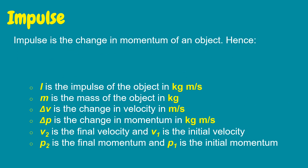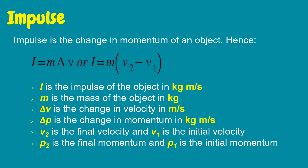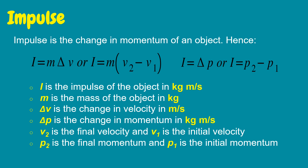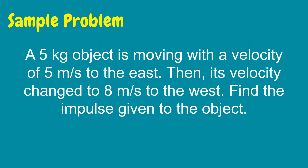Impulse is the change in momentum of an object. Hence, impulse is equal to mass times change in velocity, or mass times final velocity minus initial velocity, or impulse is equal to change in momentum, or impulse is equal to final momentum minus initial momentum. To apply the concept of impulse, let's solve this sample problem. A 5-kilogram object is moving with a velocity of 5 meters per second to the east. Then its velocity changes to 8 meters per second to the west. Find the impulse given to the object.